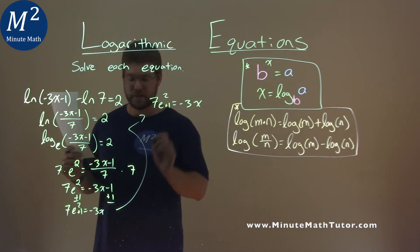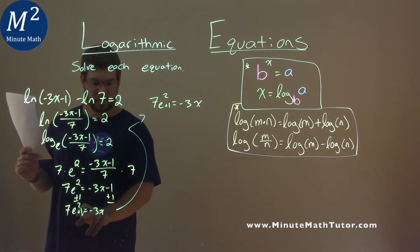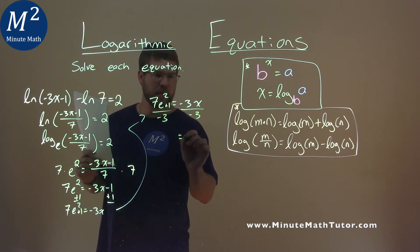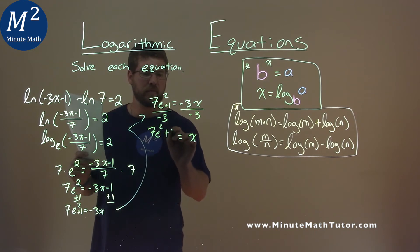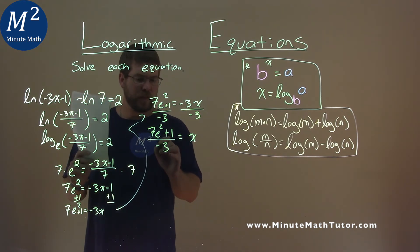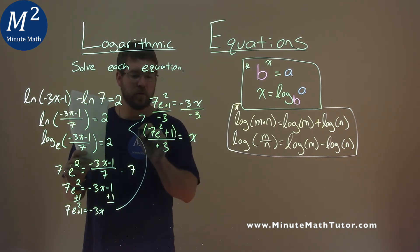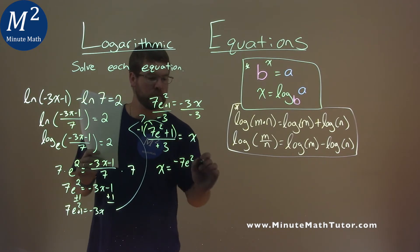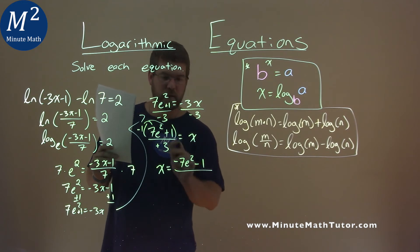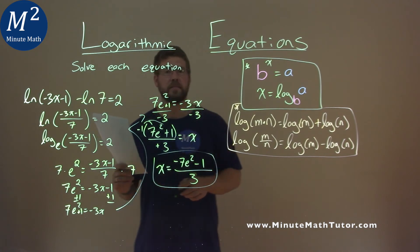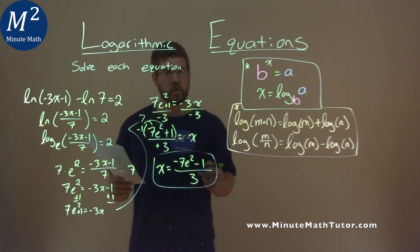So 7e squared plus 1 equals negative 3x. Divide both sides by negative 3, giving x equals 7e squared plus 1 over negative 3. I like to have the negative in the numerator, so I multiply the numerator by negative 1. So x equals negative 7e squared minus 1, all over positive 3. Our final answer is x equals negative 7e squared minus 1 over 3.